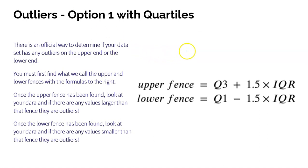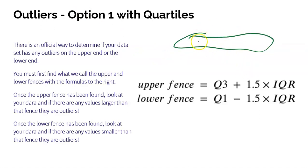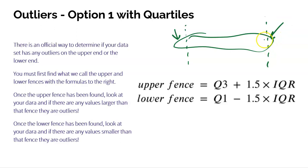So basically what we do: we have our data and we create fences. We say if anything is below a certain low fence, then it's officially an outlier. Or if anything is above some upper fence, anything above that upper fence is an outlier. These are not actual data values — these are just numbers we calculate that set those fences. If you're outside the fence, you're an outlier. Inside the fence, not an outlier.